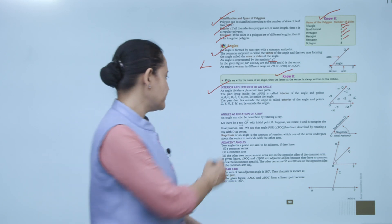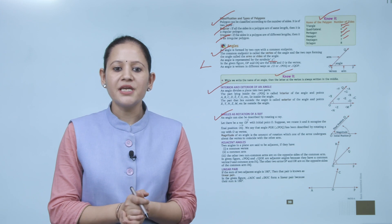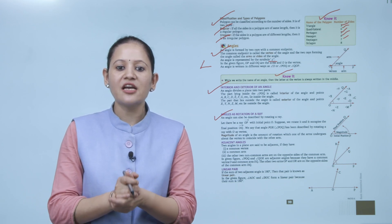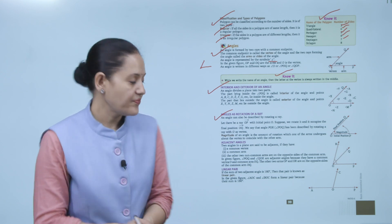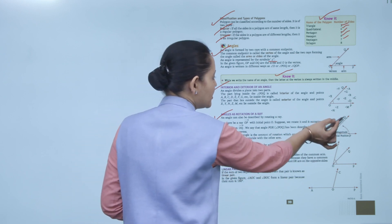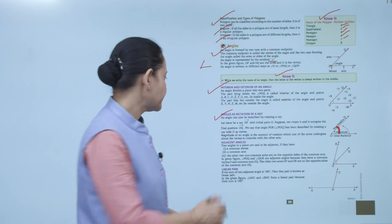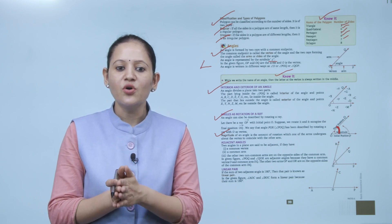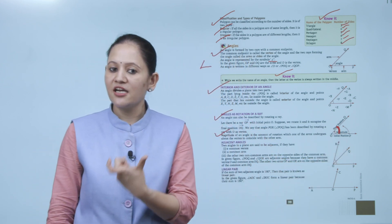An angle can also be described by rotating a ray. If ray OP with initial point O is rotated to final position OQ, then angle POQ is described by rotating ray OP about vertex O. The magnitude of an angle is the amount of rotation which one arm undergoes about the vertex to coincide with the other arm.